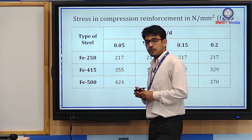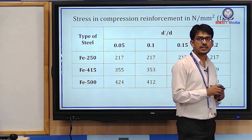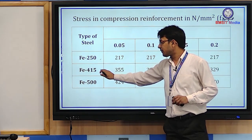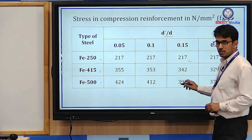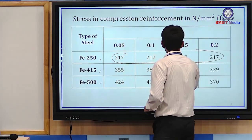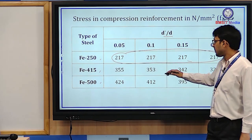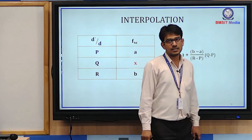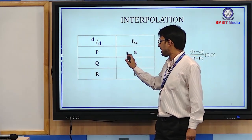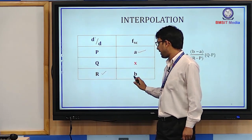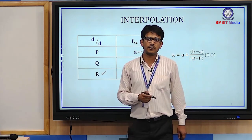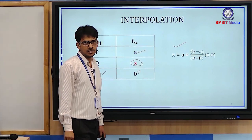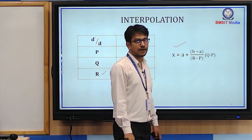The fsc value depends on the grade of reinforcement. For Fe250, fsc is always 270 N/mm². For Fe415 and Fe500, we need to use the IS code table and interpolate based on d'/d. For interpolation: if fsc at point P is value a and at point R is value b, we use the interpolation formula to calculate the intermediate value. This gives us the stress in the compression reinforcement.